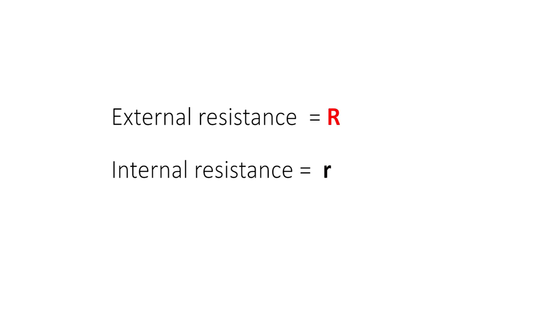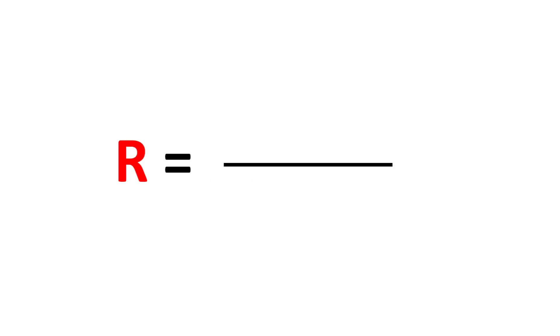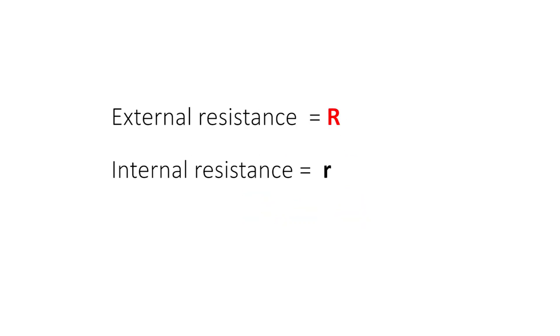Calculate big R using Ohm's law. Big R equals PD divided by I. In this case it equals 3.6 volts divided by 0.3 amps. This gives us an external resistance of 12 ohms.